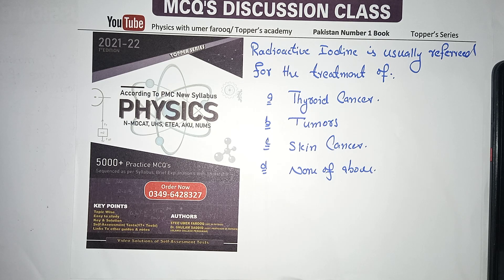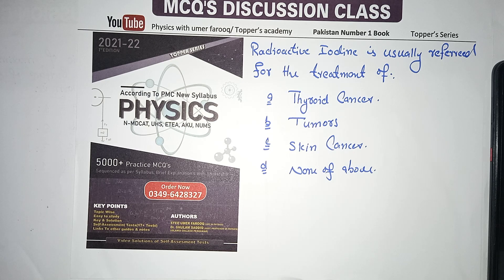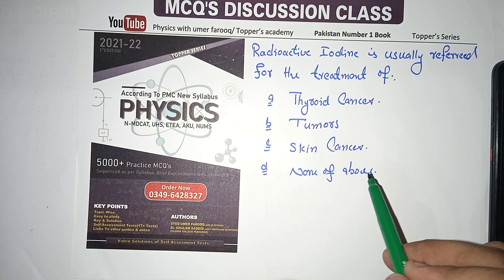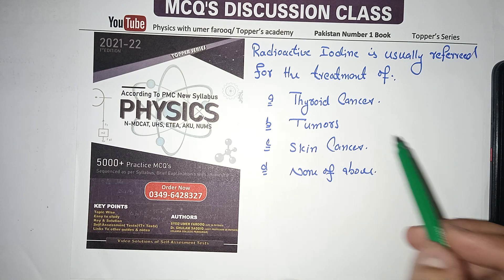Next MCQ: Radioactive iodine-131 is usually referred for the treatment of which cancer? It is used for thyroid cancer. Among the options — thyroid cancer, tumor, skin cancer — the best answer is thyroid cancer.